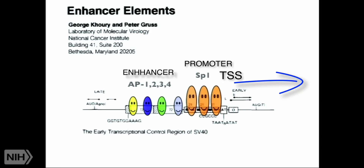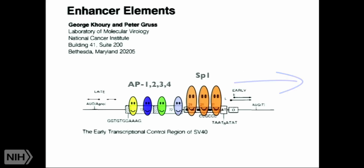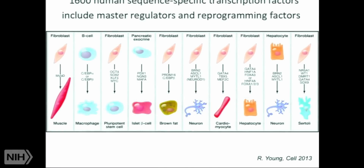These are host factors — they're not encoded by the virus, they're actually encoded by the mammalian genome itself. And that, in turn, presaged the explosion of studies on transcription factors — sequence-specific factors. At the last count, I think we now have roughly about 1,600 human transcription factors encoded by the human genome.